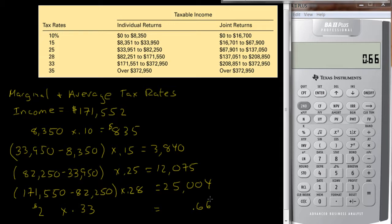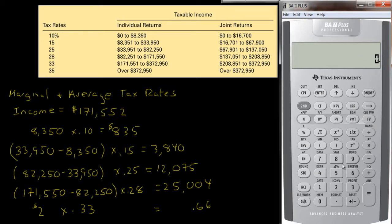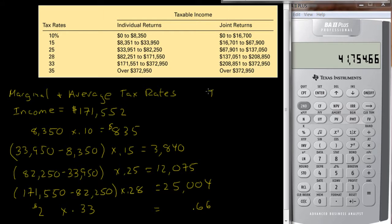Alright, so let's add that up. We have $835 plus $3,840 plus $12,075 plus $25,004 plus $0.66, and so they pay a total tax of $41,754.66.